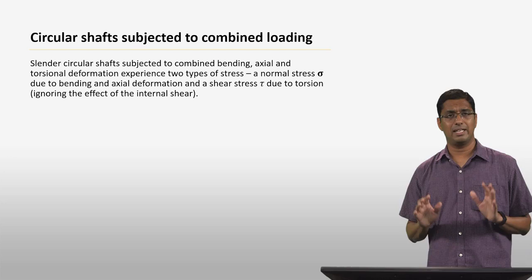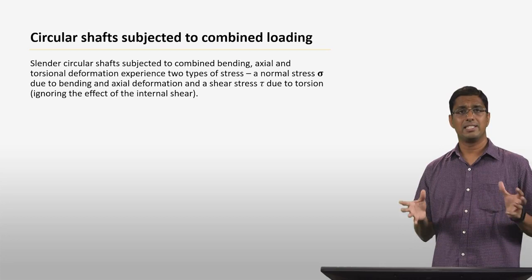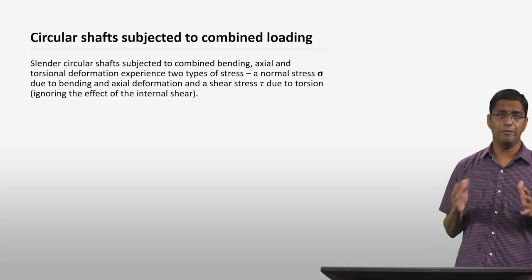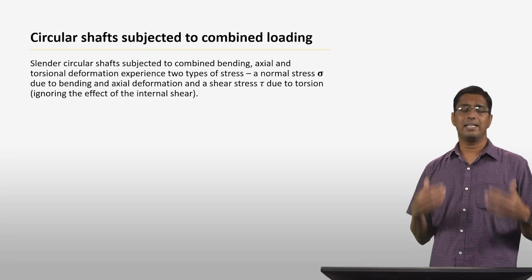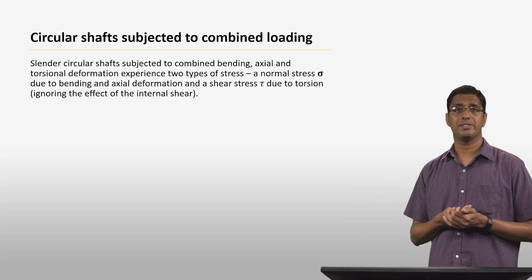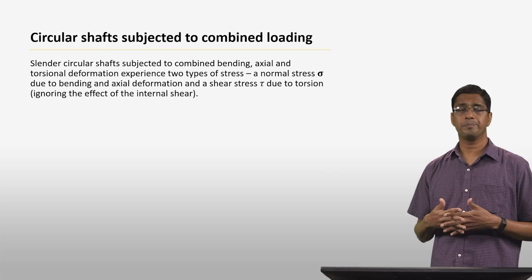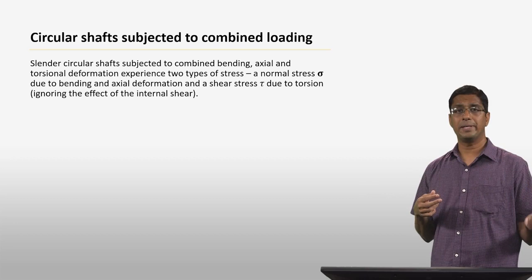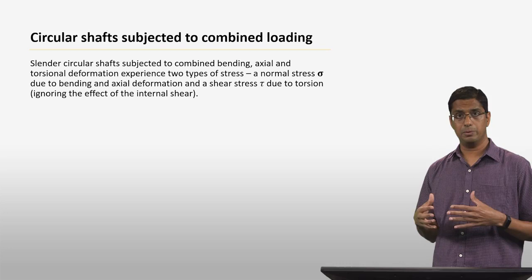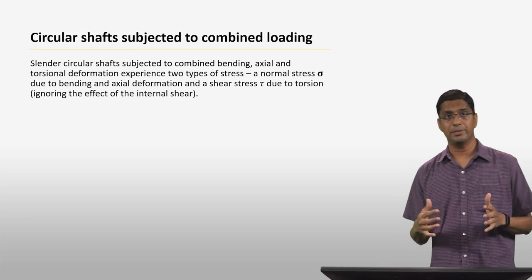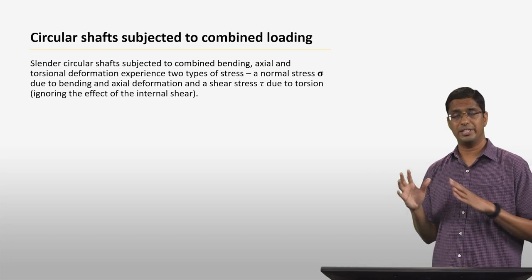Let's look at the structure we analyze most in this class: circular shafts subjected to combined loading. If you consider a slender circular shaft — where the length is at least 10 times larger than the diameter — subjected to combined bending, axial, and torsional deformation, then it will experience two types of stresses: a normal stress σ due to bending and axial deformation, and a shear stress τ due to torsional deformation. We ignore the effect of internal shear forces.